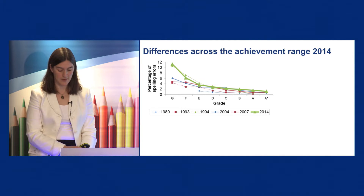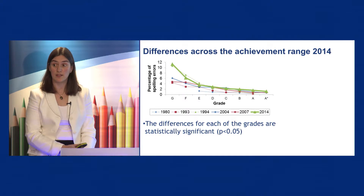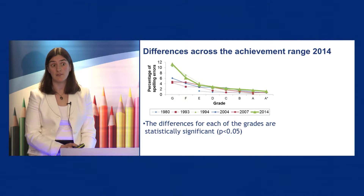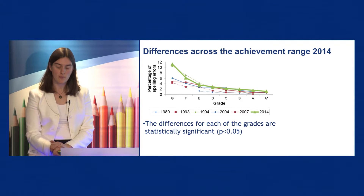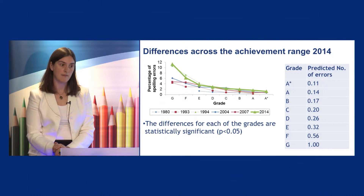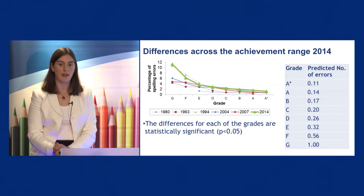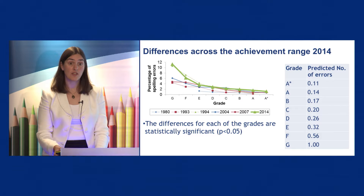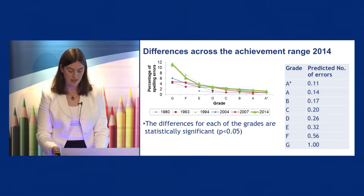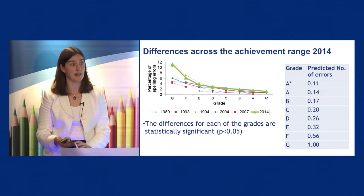We found that the differences for the grades were statistically significant, so we were able to use these to predict the numbers of errors that students with different levels of achievement were likely to make. As shown in this table, the lowest-achieving students make ten times more errors than the highest-achieving students and five times more errors than the middle level of achievement.